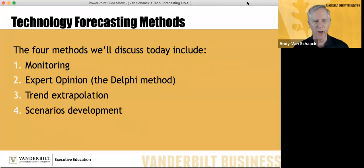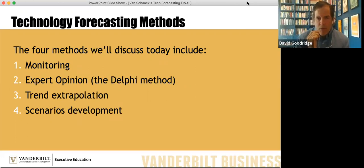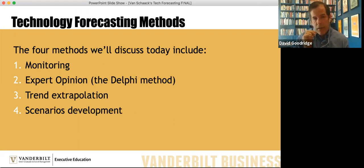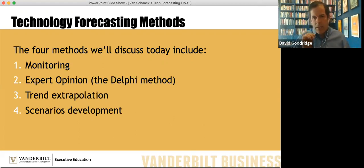These are the four methods for forecasting we're going to talk about today: monitoring, expert opinion and the Delphi method, trend extrapolation, and scenario development. We're going to treat this like a classroom. If you would please type into chat your company name — if you're not comfortable with that, an industry that best represents your company, or just an industry you want Andy to talk about. As we go through these four methods, I'll pick one and we'll actually tackle it in real time. So pop in your company name and let's get started with the first one: monitoring.